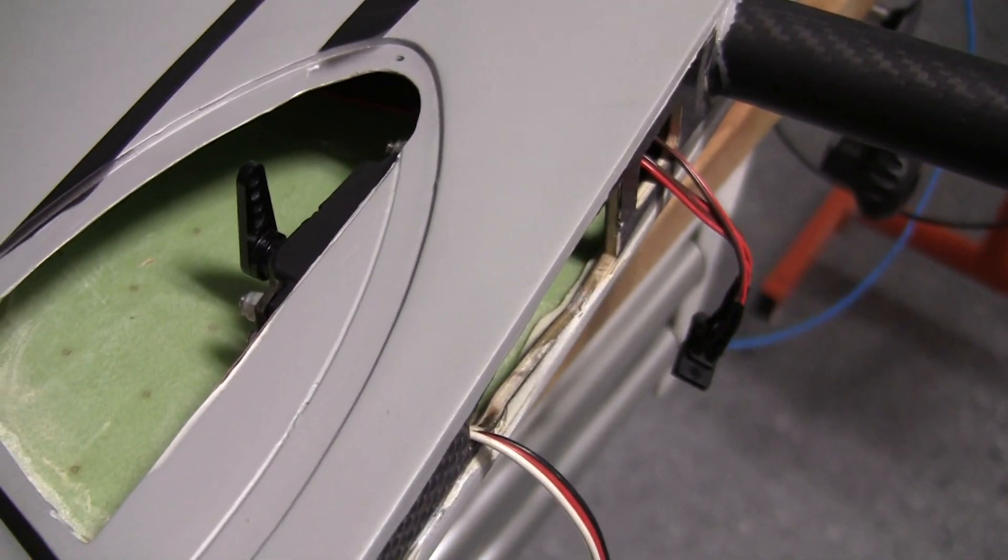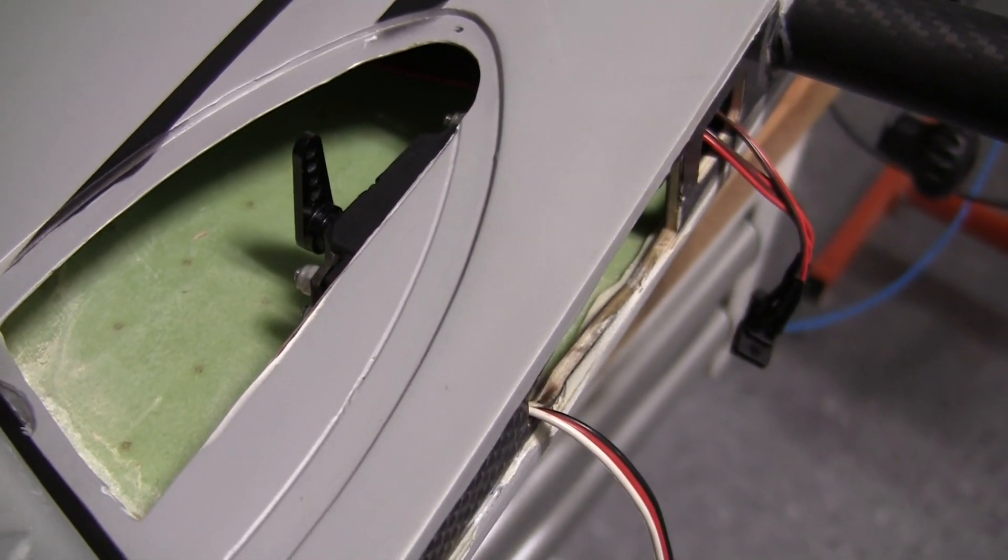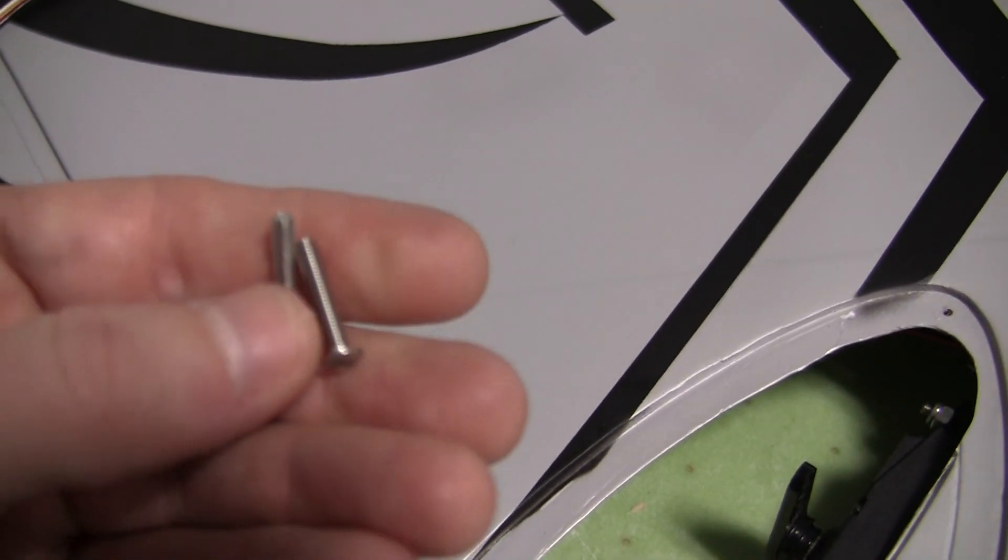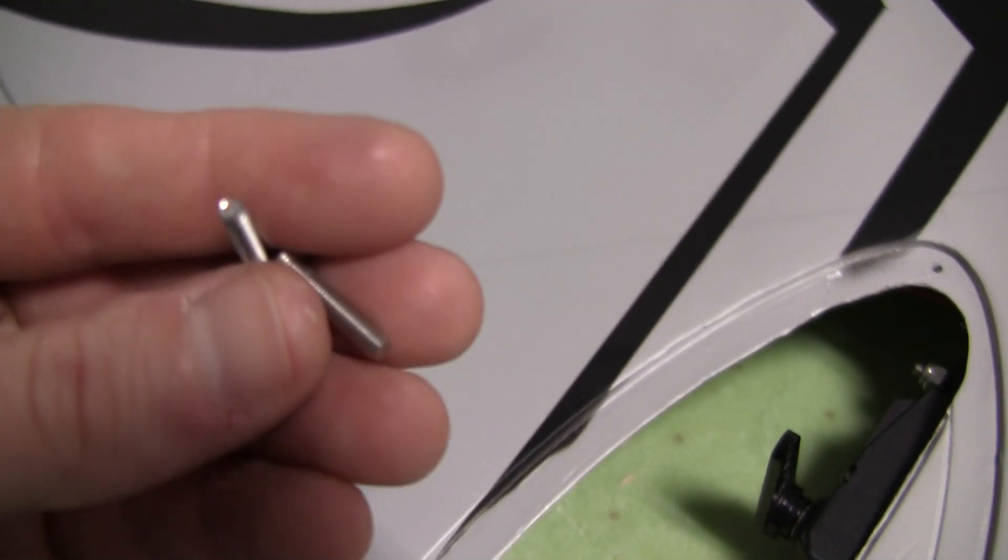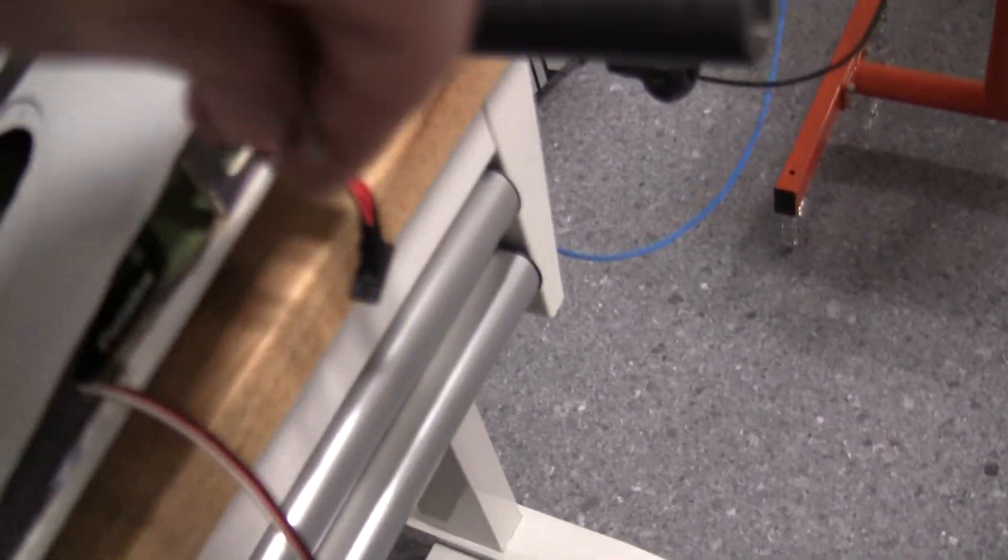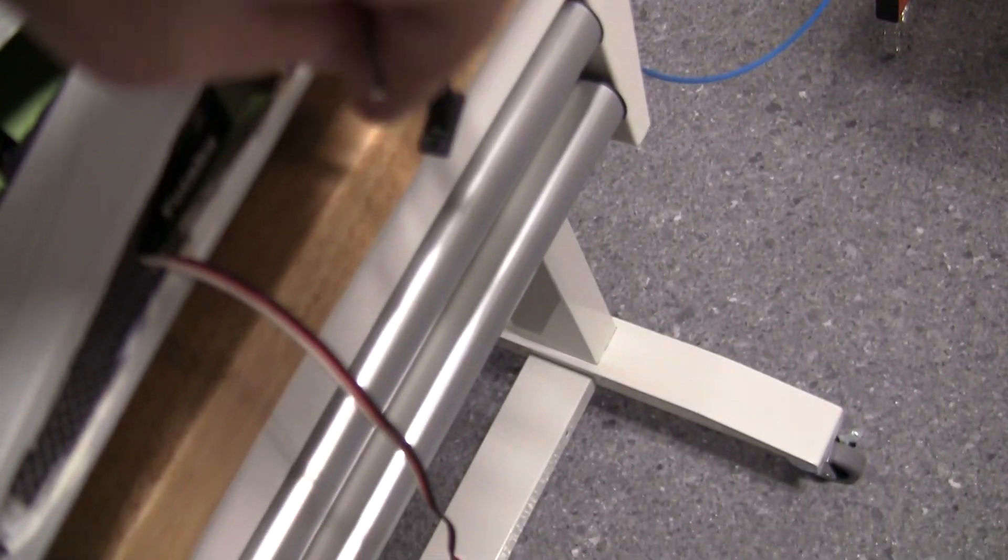But anyway, so what I did is I drilled out for a three millimeter bolt here. Use these 16 millimeter long ones and come in from this side with the head and then put the lock nut on this side.